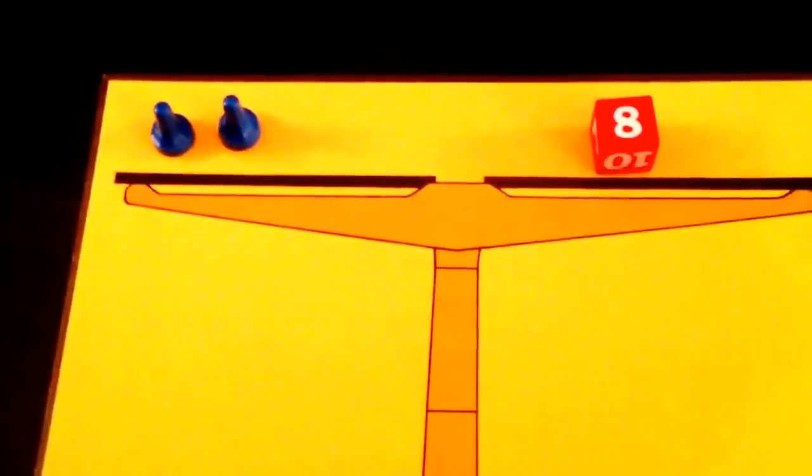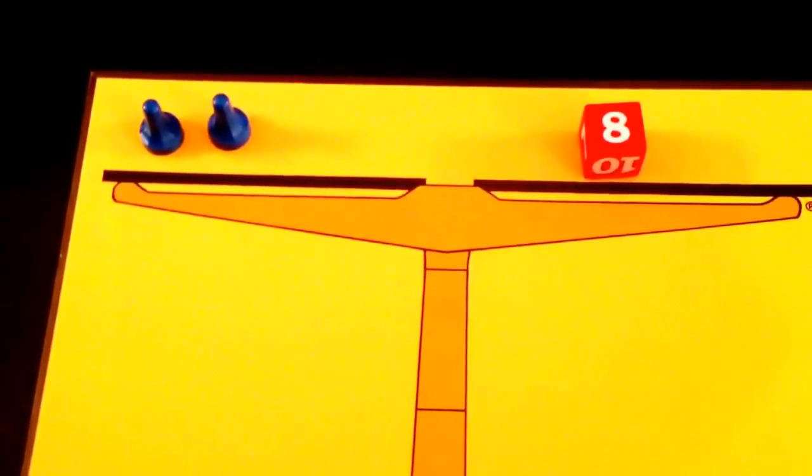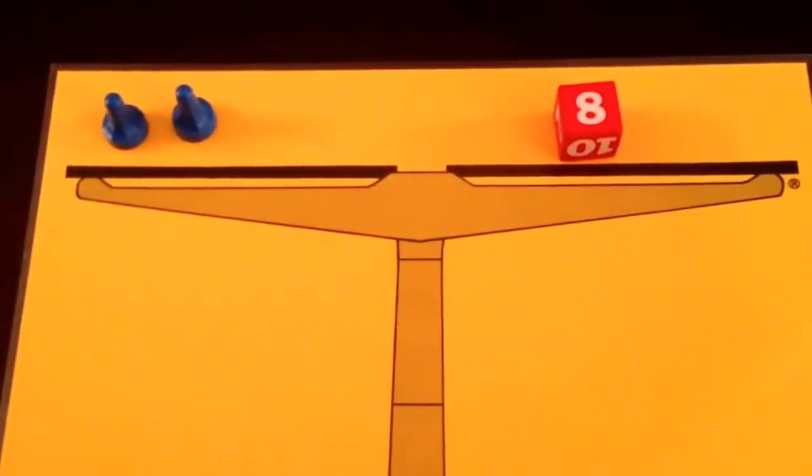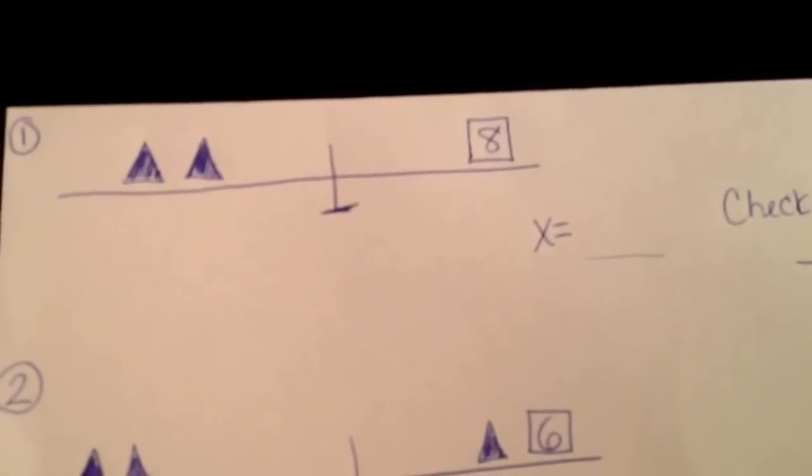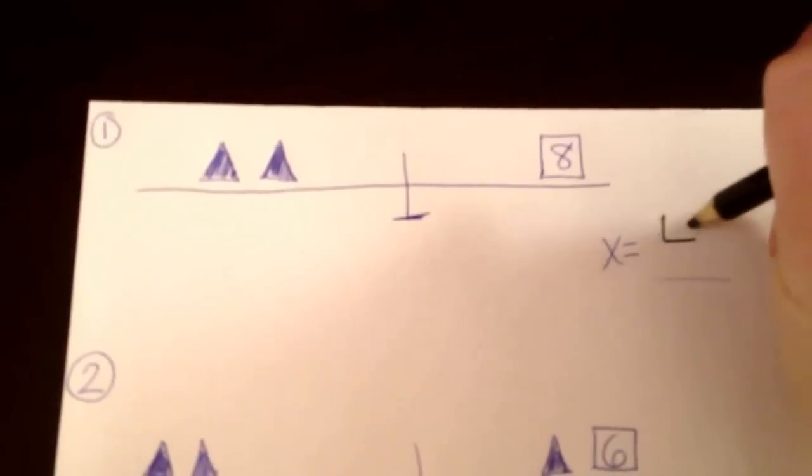So one blue pawn is going to be equal to 4. Because 4 plus 4 equals 8. And that stays balanced. So over here on our answer sheet, we're going to look at this first question. And we're going to fill in X equals 4.